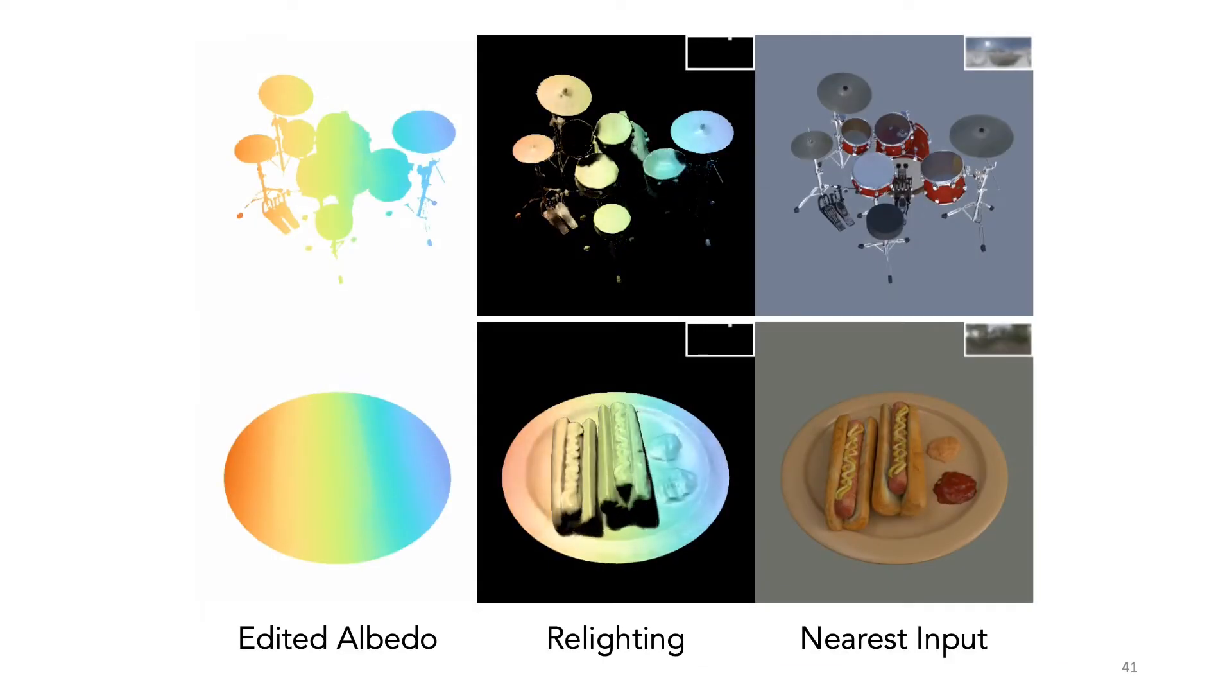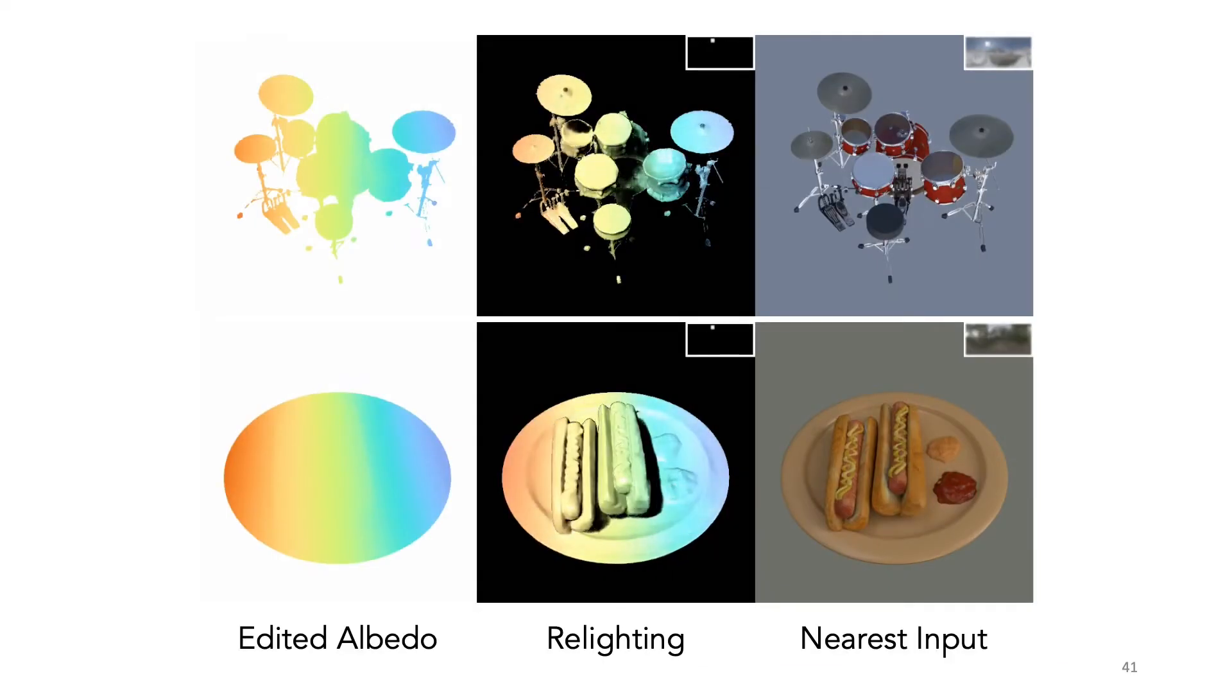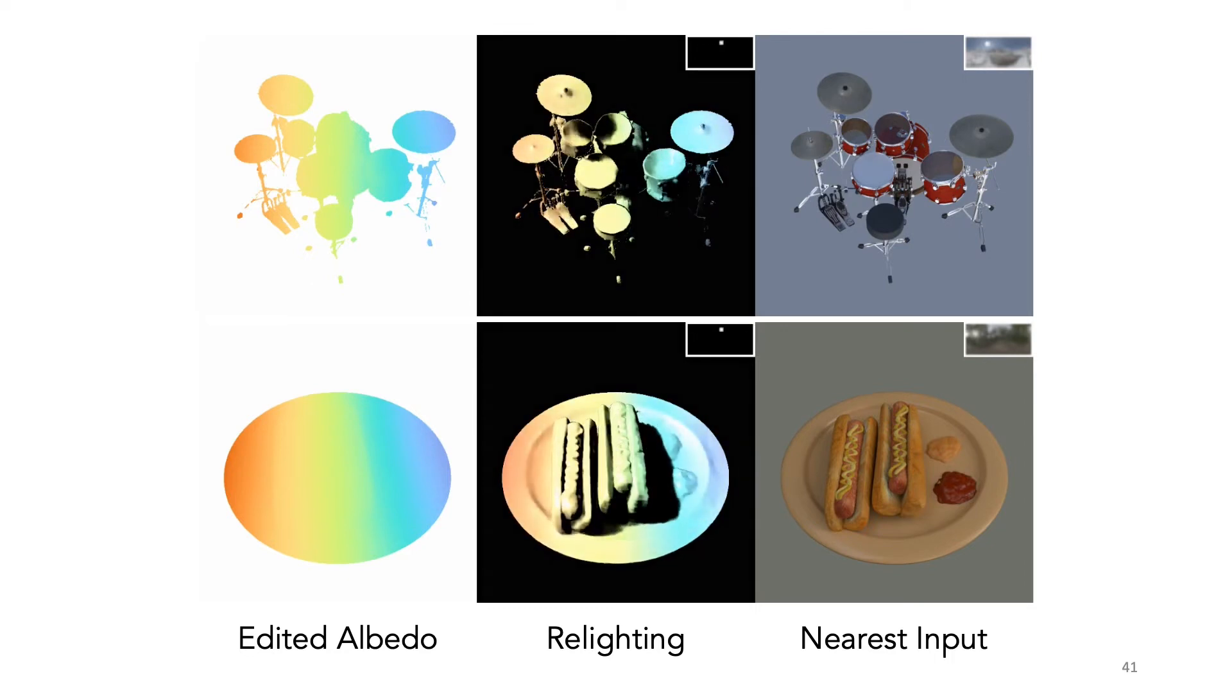Because we explicitly model albedo and BRDFs, we can edit the material and then relight the edited scene.